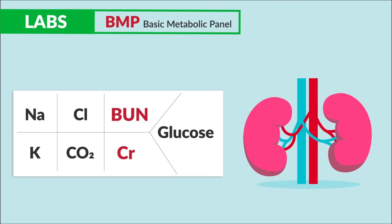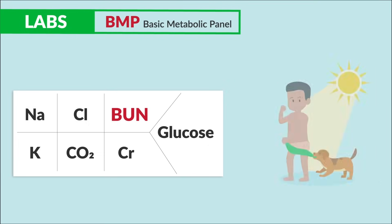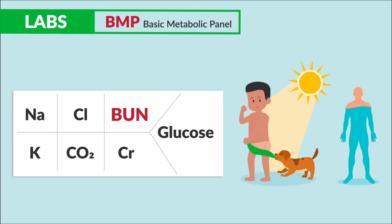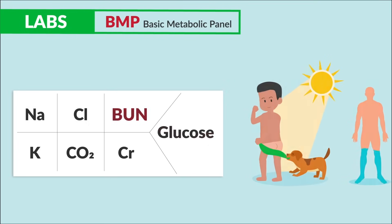We have the two kidney labs: BUN and creatinine — just think two labs for two kidney functions. The biggest one is creatinine; usually if creatinine is high, the kidneys have failed. If BUN only is elevated, we usually have 'burned buns,' or basically dehydration.